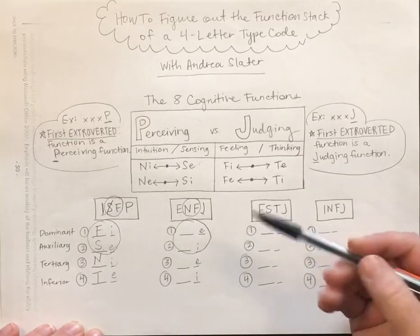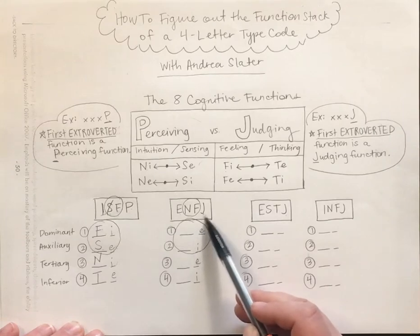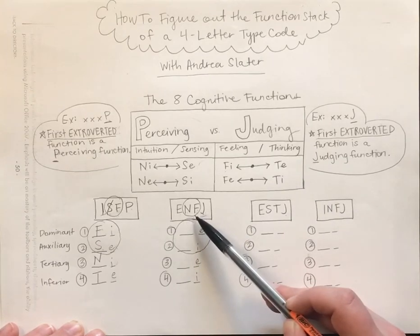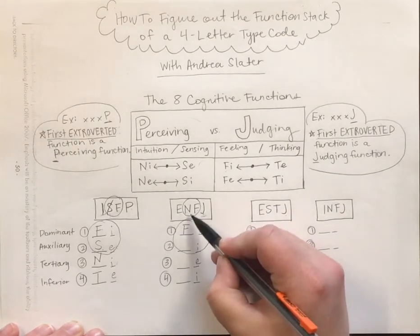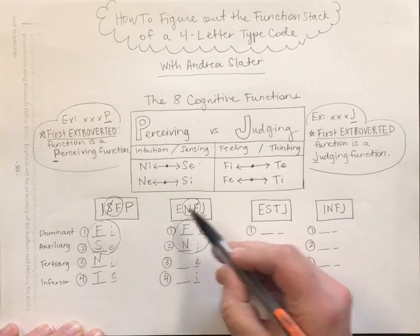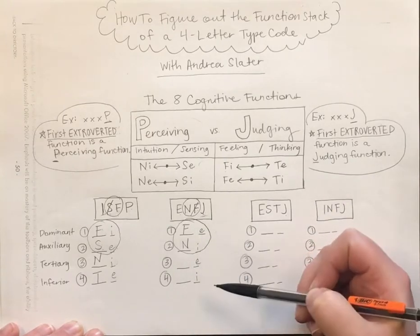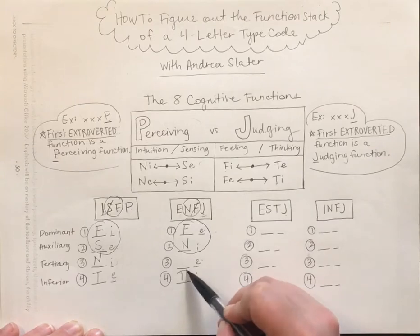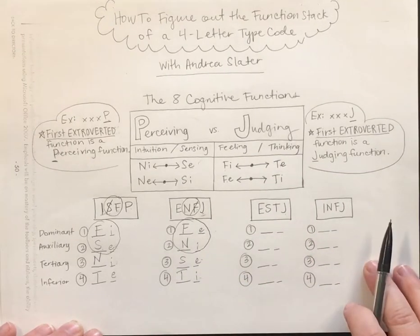Now we'll fill out the ENFJ function stack. Looking at the last letter — J — the first extroverted function will be a judging function. Of the two circled letters N and F, the judging function is F for feeling, so we put Fe in position one. That eliminates F, leaving N for the remaining blank. Fe is paired with Ti, so Ti goes in the next slot. Ni is paired with Se, so Se fills the last position. That is the completed function stack of the ENFJ: Fe, Ni, Ti, Se.